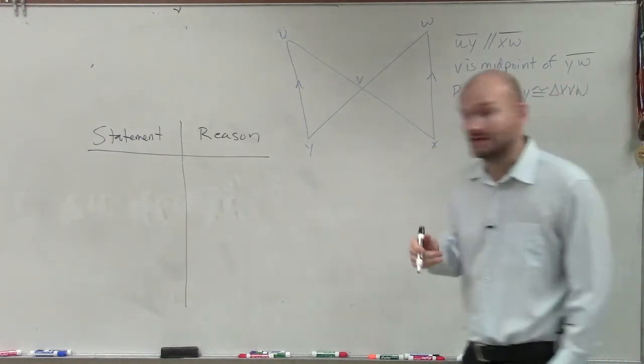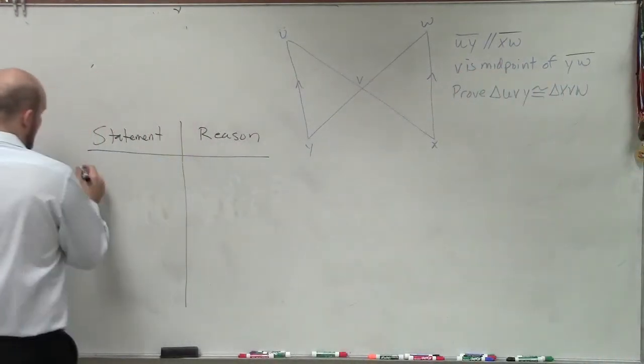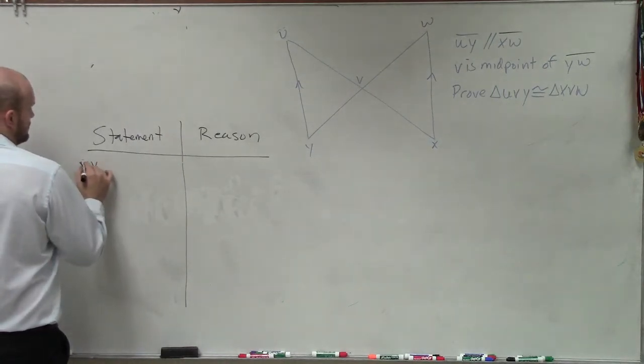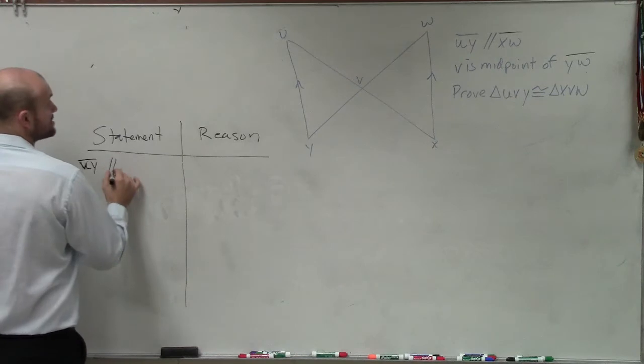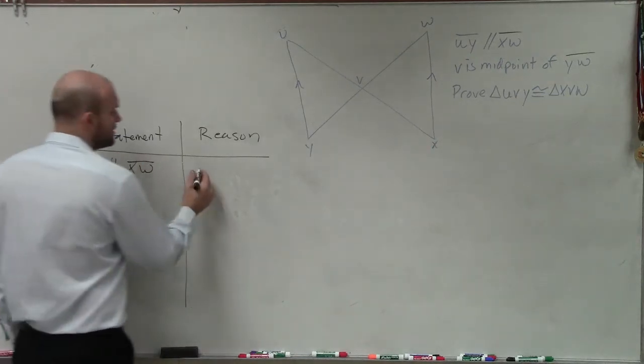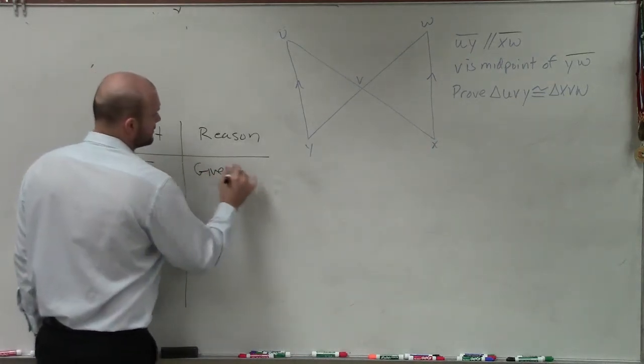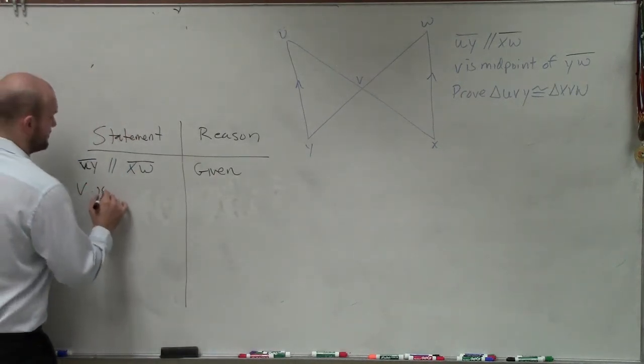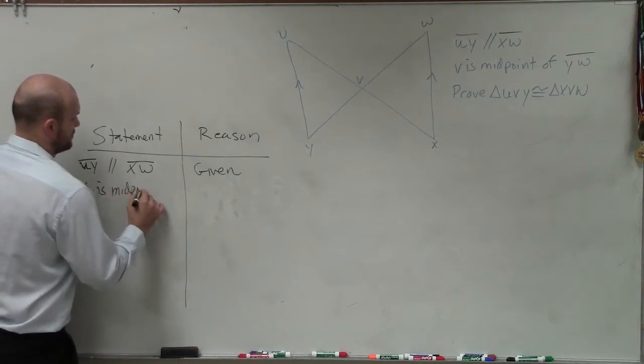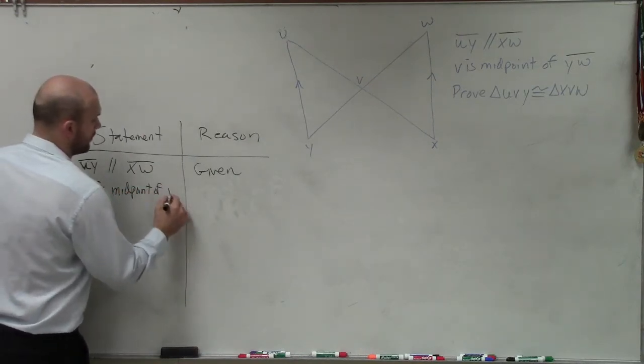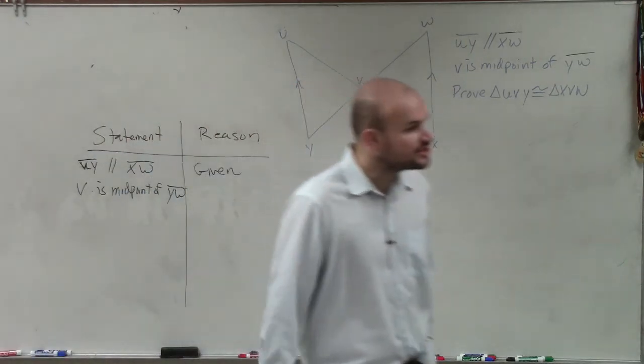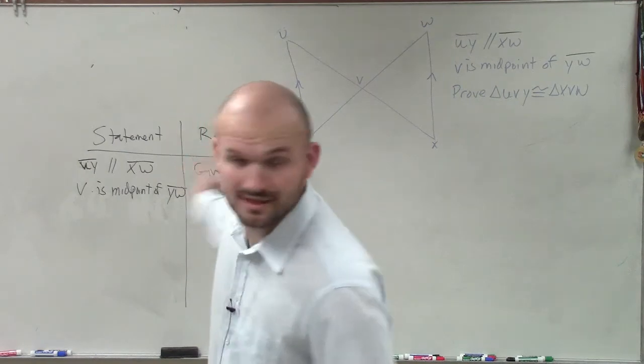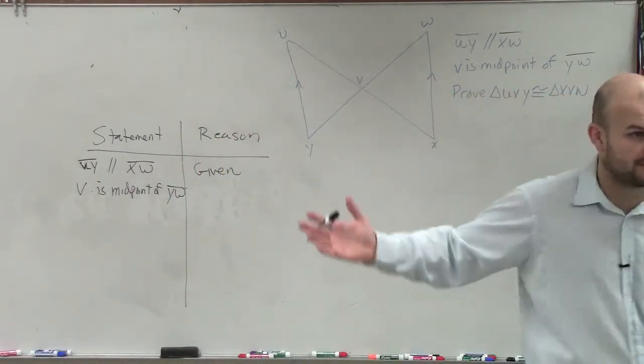So the first statement we have is UY is parallel to XW, and the reason we know that is because that is given. All right? Then we have another one is V is the midpoint of YW. So I'm pretty sure everybody in this class when they're starting off their proofs can at least get the proof started and at least write down the given information. Is that correct? Yeah? We can at least do that.